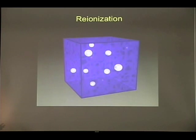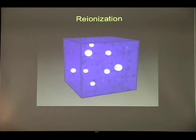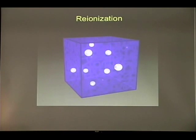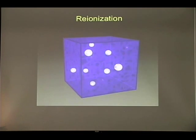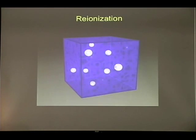The universe was at the beginning very hot, and therefore all the atoms were ionized. When the universe expanded it cooled down, and when it was about 400,000 years old all the electrons were caught inside atoms — we call this recombination. The cosmic microwave background that we see comes from that time. However, there were still no sources of light then, no stars, no galaxies.